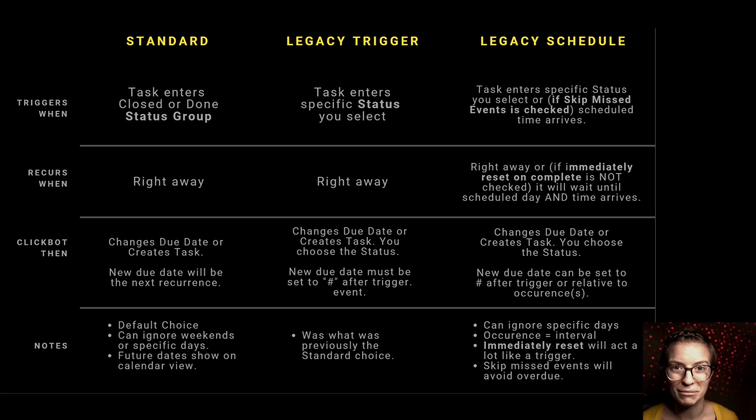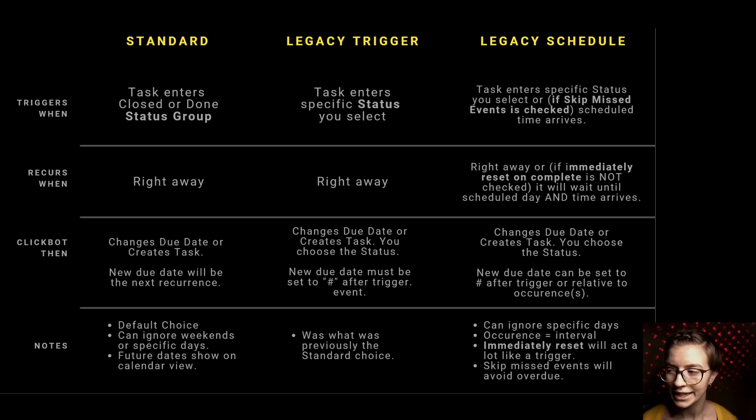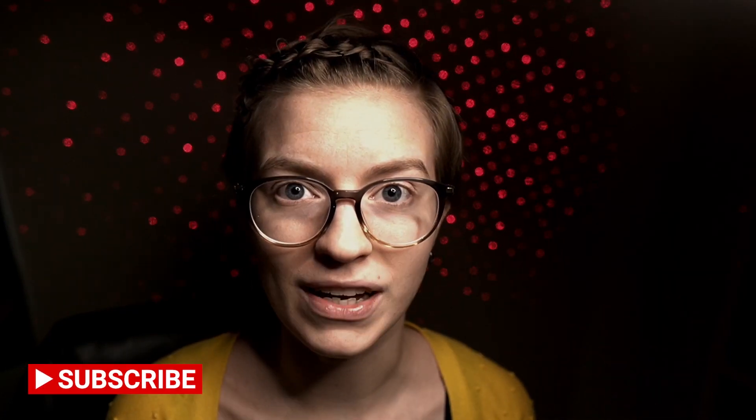Or you can choose to keep missed tasks overdue and keep creating new tasks on your interval. You might want to skip missed events for something like 'check Facebook' — if you miss a day, the next day you'll see everything you missed in the cumulative feed. But for something like 'check the analytics for today,' you'd want skip missed events unchecked, so when you catch up you can see there are two or three missed events and pull each of those numbers individually.